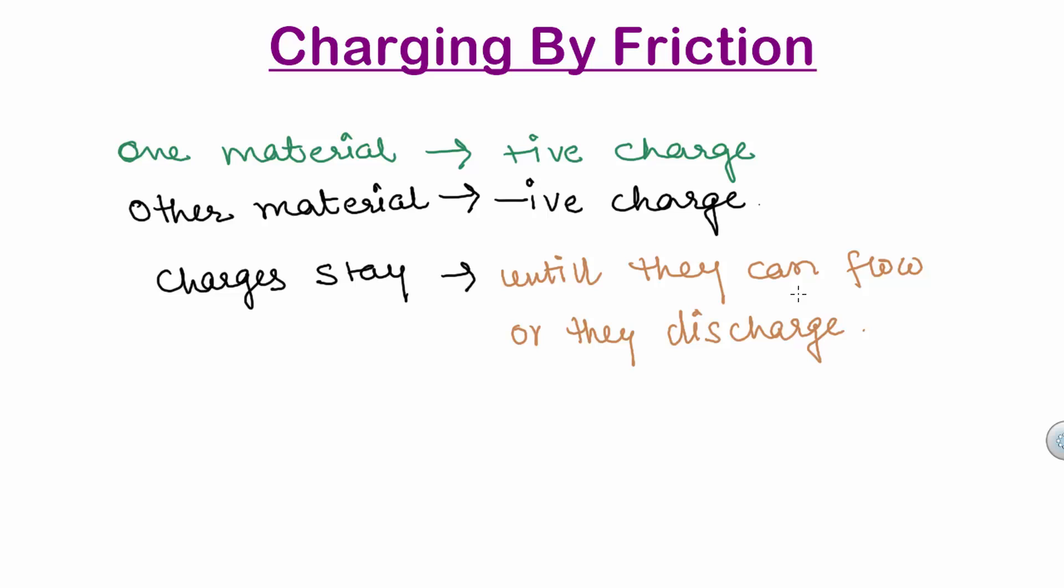Whenever there is friction between materials that vary in their capacity to give up or gain electrons, the electrons can be transferred in this manner, that is through friction.